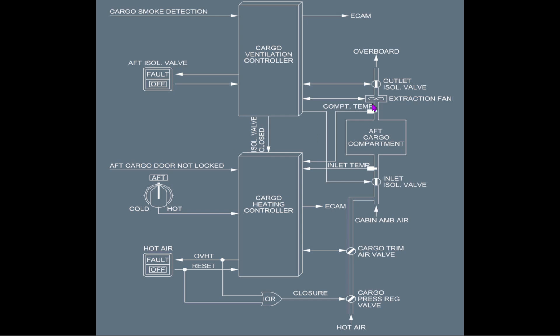Es gibt einige Unterschiede: Man könnte die Luft auch durch ein Druckgefälle nach draußen bringen – draußen weniger Druck, drinnen mehr Druck, also öffnet man die Klappe und die Luft fließt automatisch raus. Das wird gemacht, allerdings nur für den vorderen Gepäckraum. Der hintere Gepäckraum benutzt grundsätzlich den Extraction Fan; der vordere Gepäckraum benutzt den Extraction Fan nur, wenn das Druckgefälle nicht stark genug ist.